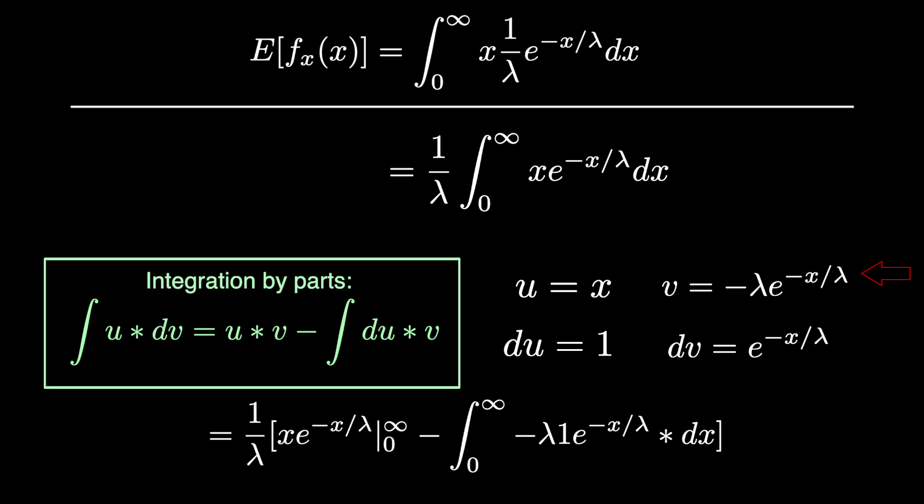Now on the bottom we have our new integral, and within the brackets we have our equation that's rewritten in the form of u dv integration. The 1 over lambda is carried over from the beginning so it applies to the entire function.